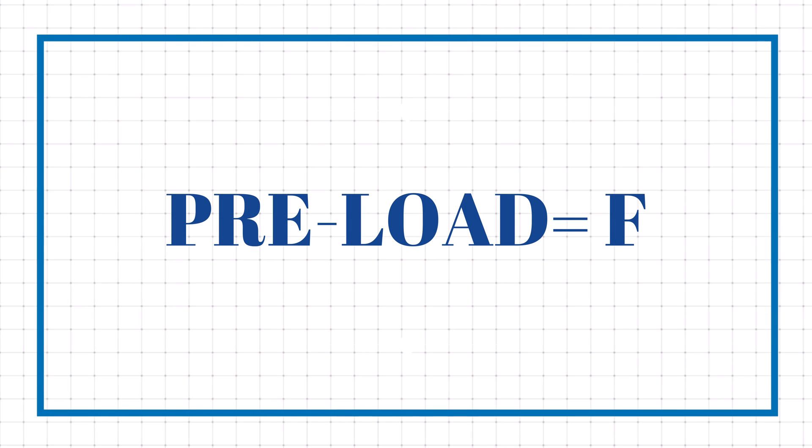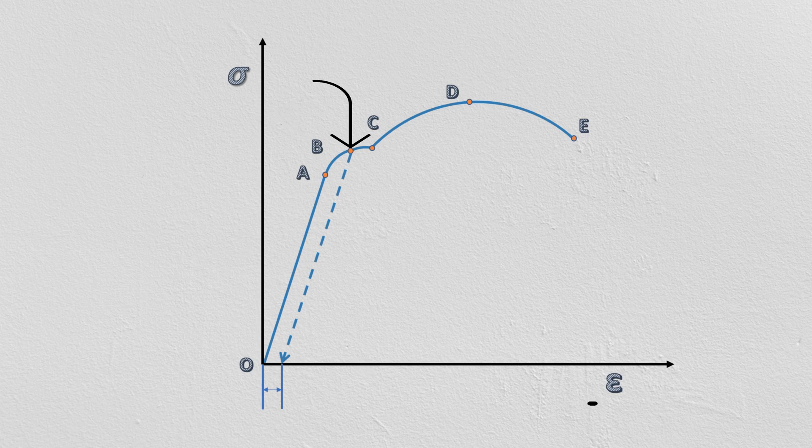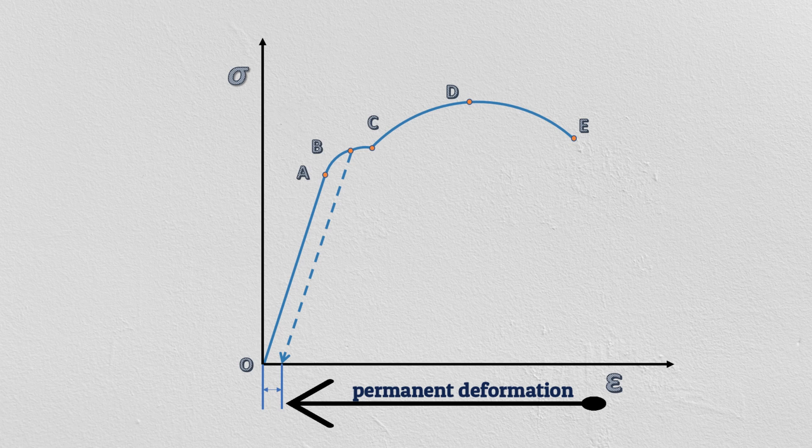Now we will calculate preload which is basically tensile load in the bolt. If we load the bolt up to its yield strength, then bolt will have permanent deformation and it cannot be used again.